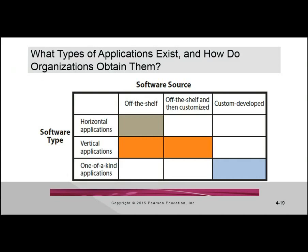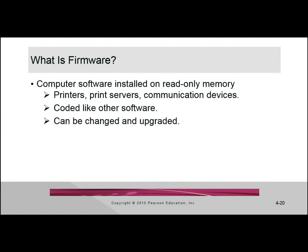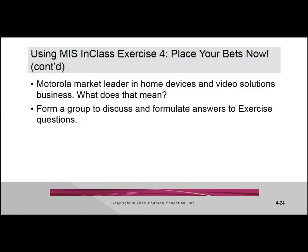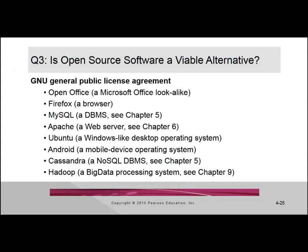Most software in organizations is acquired unless you are a software organization. Even Microsoft probably buys their payroll system software because it's horizontal software - why develop your own when someone else does it? This is all possible because we can easily duplicate software. We can't easily duplicate a house or a physical item, but digital items we can easily duplicate. We talked about application software, operating system software, and open source. What is open source compared to proprietary software?